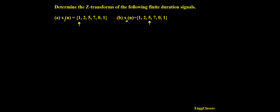These two sequences are differently positioned. The first signal x1(n) starts at the 0th position, while for x2(n), the reference position is indicated and values extend to minus 1, minus 2, and so on. So how do we find the z-transform of such sequences? Let me start with the solution.